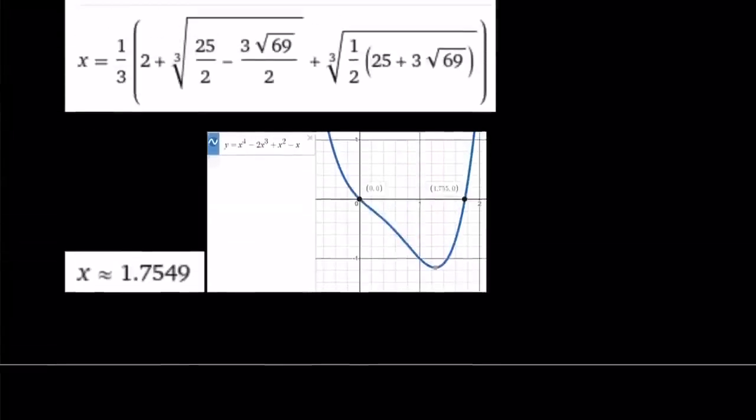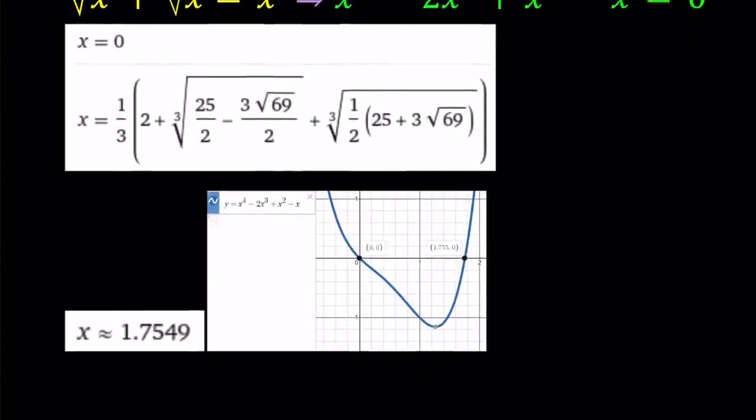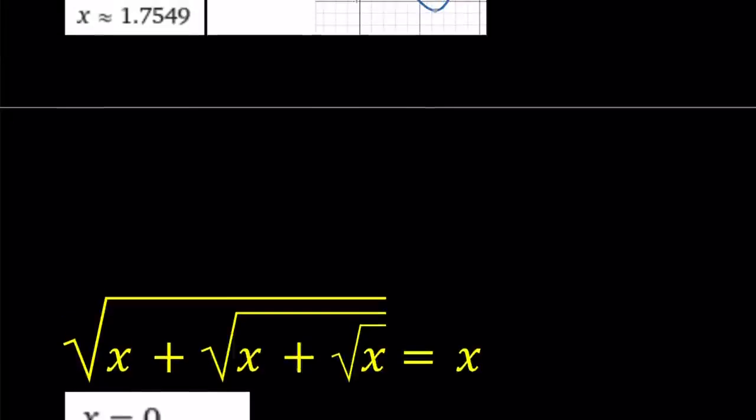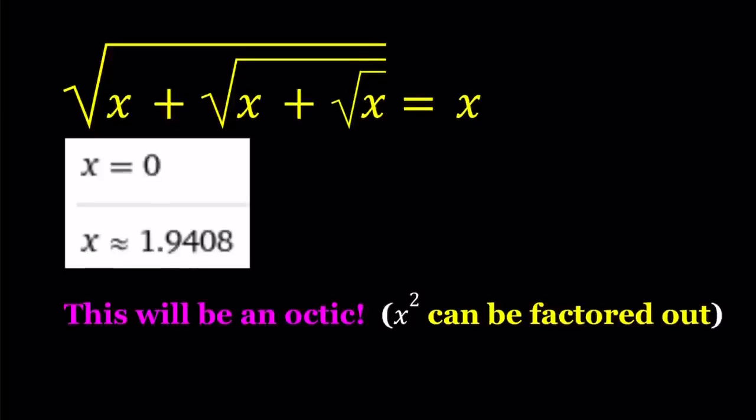But the thing is, remember, in this equation, we were able to factor out x. And in this one, we are able to factor out x squared. So that actually becomes, that doesn't become an octic. That becomes something like a hexic or sextic. All right. Great. So that solution is going to be 1.9-ish. Now, notice that the values of x are getting larger as we go when we have more radicals. What happens if we have infinitely many of these? Let's go ahead and find out. And let me start with the first method.